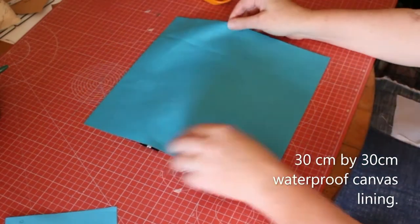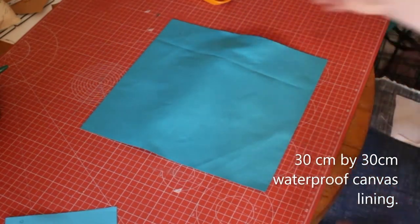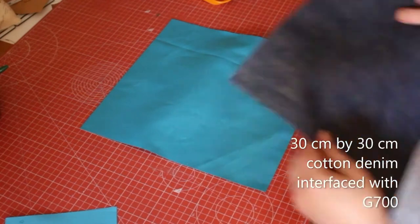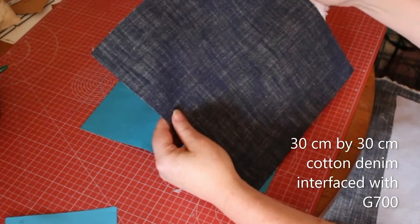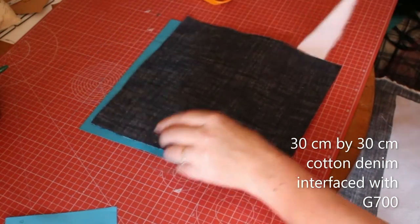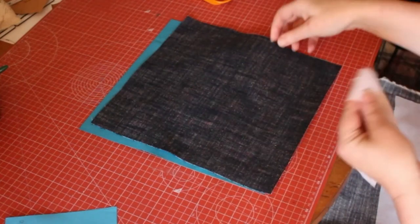Then these are pull tabs, the waterproof lining, and the denim. The denim has been interfaced with G700.